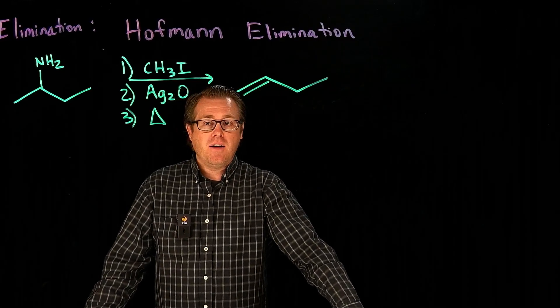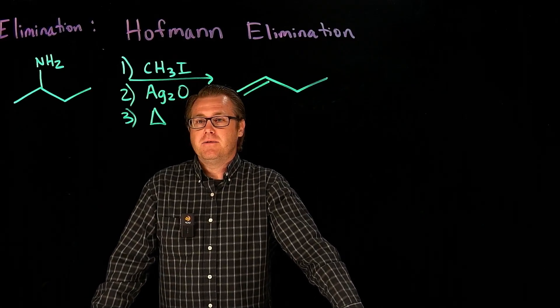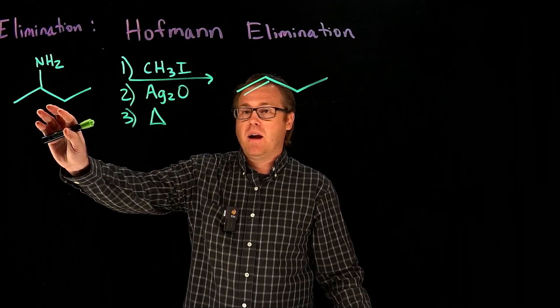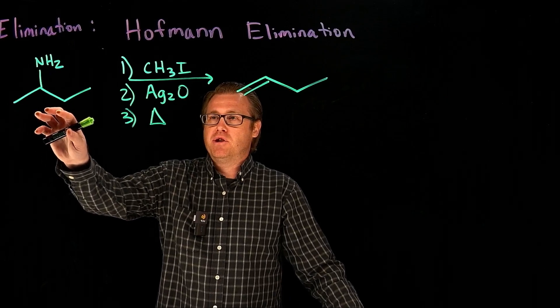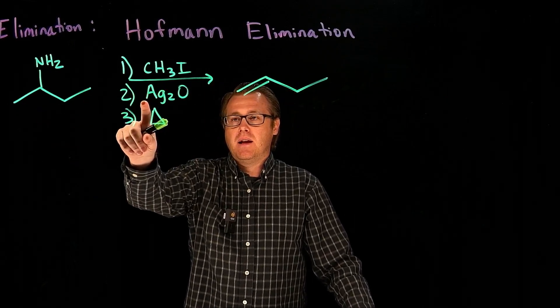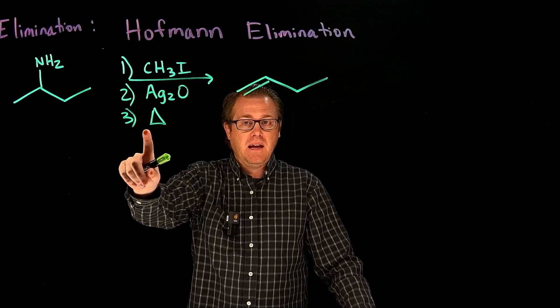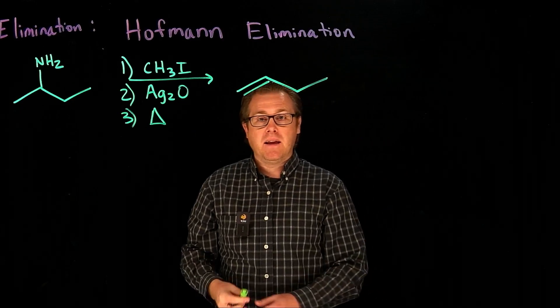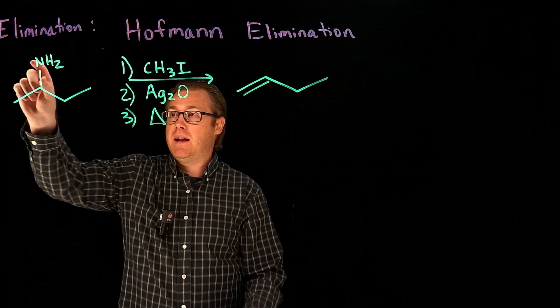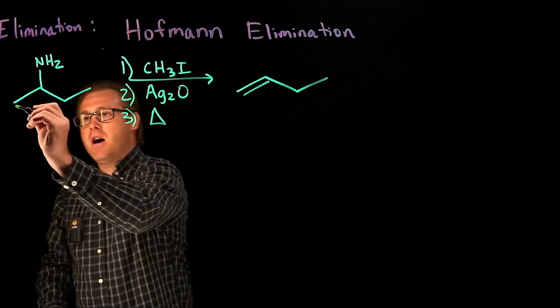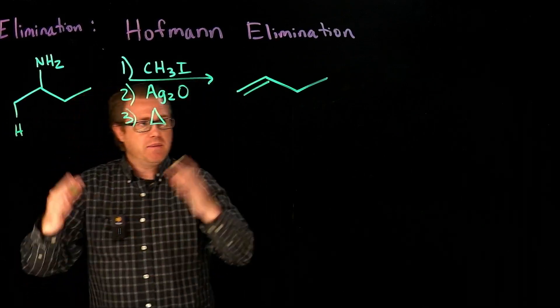In this reaction called the Hoffman elimination, what's really cool is we're taking an amine and treating it with methyl iodide, silver oxide, and some heat to generate an alkene. We've done an elimination because we have eliminated the amine group and one of the hydrogens off of this carbon.